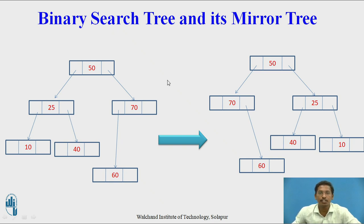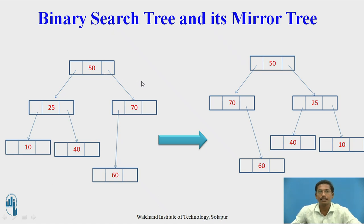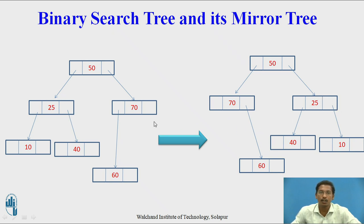Now this is how a binary search tree and its mirror tree look. Suppose this is my original binary search tree with 50 as a root node, 25 is present on the left subtree of 50, 70 is present on the right subtree of 50, 60 is less than 70 so it is on the left subtree of 70, 40 is greater than 25 so it is the right child of 25, and 10 is less than 25 so it is the left child of 25. After converting the original binary search tree into its mirror tree, 50 remains the root. 70, which was on the right side of 50, becomes the left child of 50, and 25, which was on the left, is now on the right. This is the mirror tree of the original binary search tree.